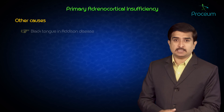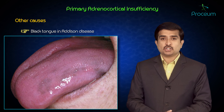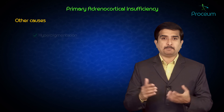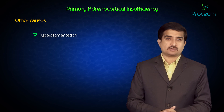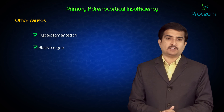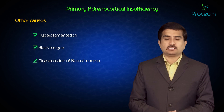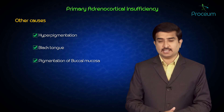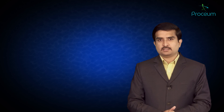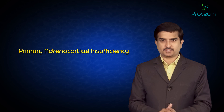Black tongue can also be seen in Addison's disease. Hyperpigmentation, black tongue, and pigmentation of the buccal mucosa are all typical clinical manifestations. This completes our detailed discussion of adrenocortical insufficiency.